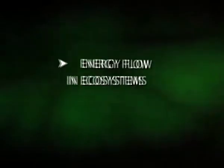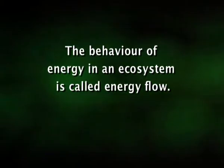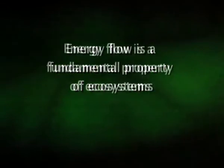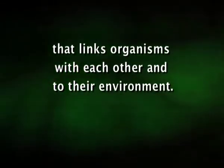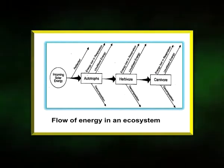The behavior of energy in an ecosystem is called energy flow. Energy flow is a fundamental property of ecosystems that links organisms with each other and to their environment. With respect to energy flow, ecosystems are open systems — they are dependent on an external source of energy, which is the sun. Except for the deep sea hydrothermal ecosystem, the sun is the only source of energy for all ecosystems on Earth.